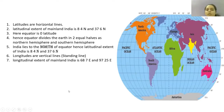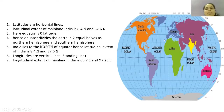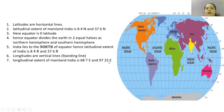The longitudinal extent of mainland India is 68 degrees 7 minutes East and 97 degrees 25 minutes East. Now you must be wondering why we have written East here and not North — 68 degrees 7 minutes East and 97 degrees 25 minutes East, not North. This is because when we talk about longitudes, the vertical lines,